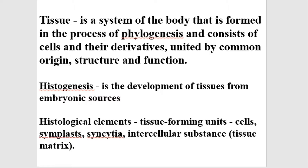The next important concept is histogenesis. Histogenesis is the development of tissues from embryonic sources and histological elements — the tissue-forming units such as cells, blasts, symplasts, and the intercellular substance or tissue matrix.